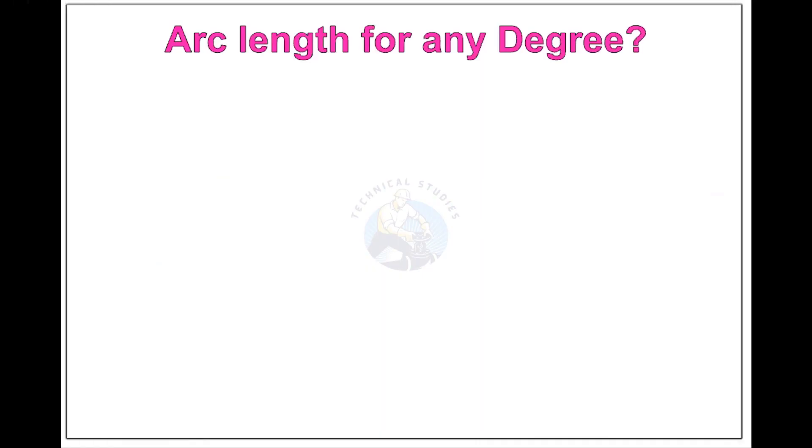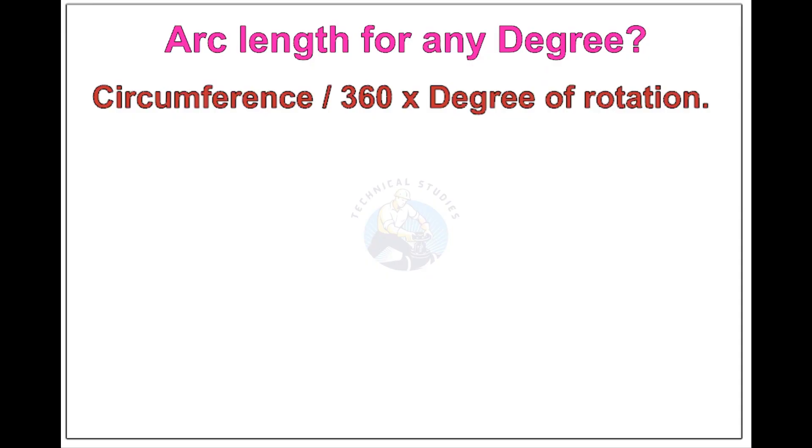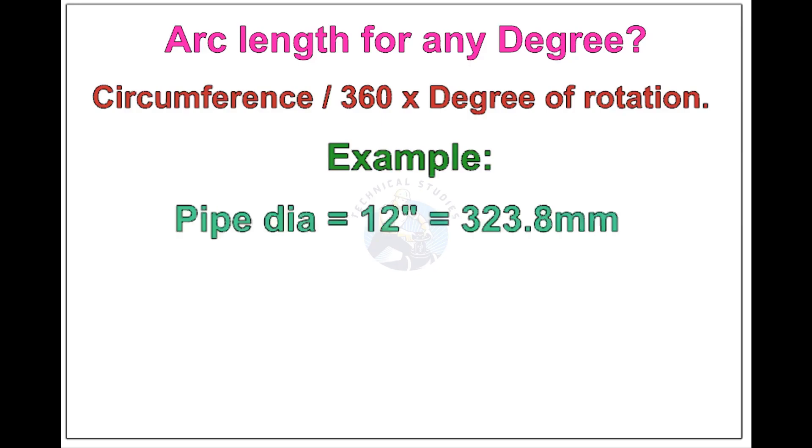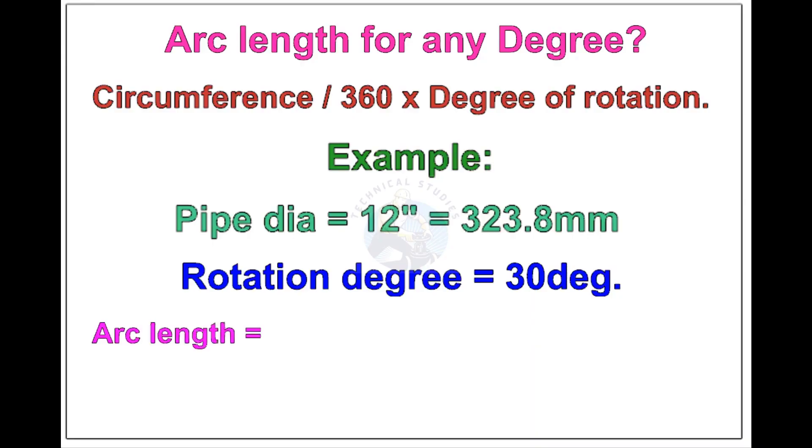Arc length of any degree: Circumference of the pipe divided by 360 into the degree of rotation. Let us check the arc length of 12 inch pipe rotated 30 degree. Apply the formula. The answer is 84.8 millimeters.